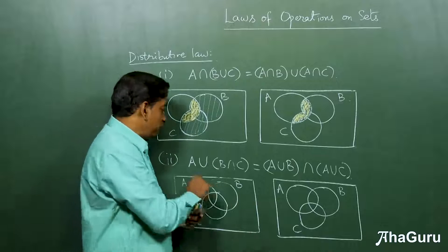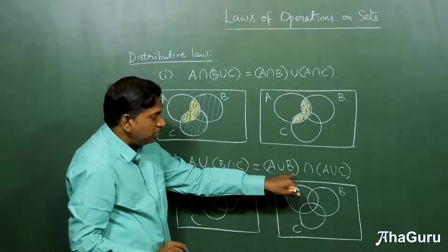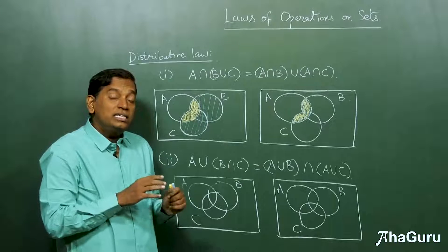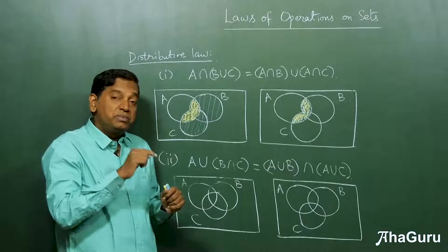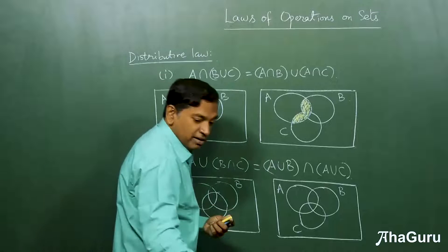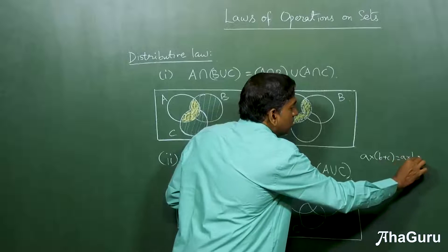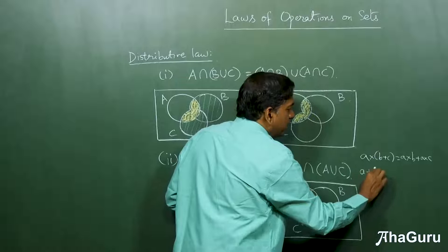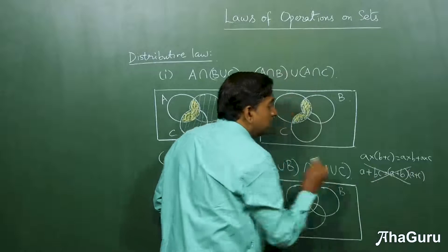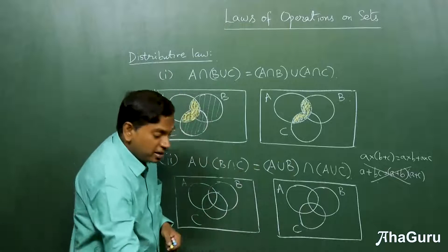Now we come to the other law which is A union B intersection C is A union B intersection A union C. This distributive law has no analogy in numbers. In numbers, you have A times B plus C is A times B plus A times C, but you never have the equivalent — we never write the analogous form for addition over multiplication, because this would be absurd. But that's exactly similar to what we have actually written here. But let's see if it's true.